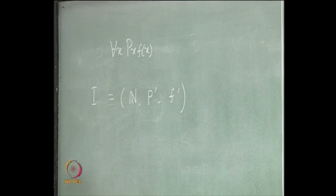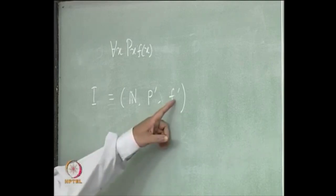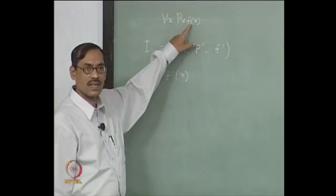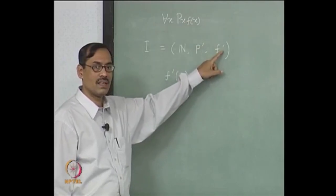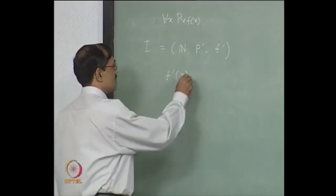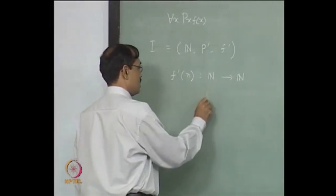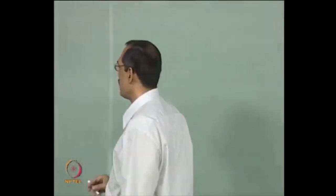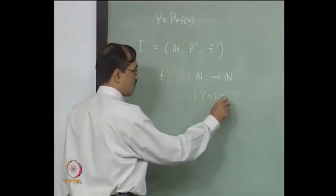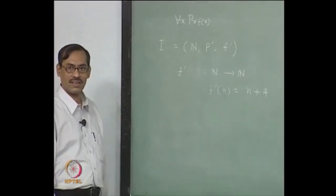We have to say what p prime and f prime are. f prime is a unary function symbol with only one argument, so f prime should be a unary partial function from the naturals to the naturals. Let us define f prime of n = n + 4.